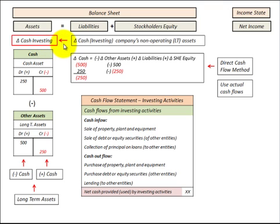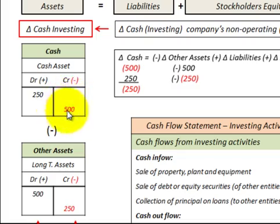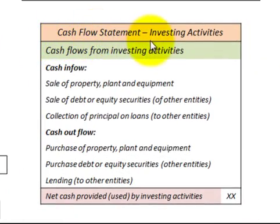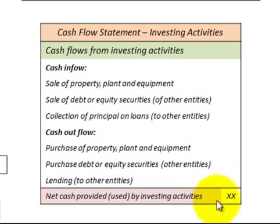In summary, our change in cash due to investing activities involves the company's non-operating long-term assets. A debit to our cash account is a cash inflow, and a credit to cash is a cash outflow. On our cash flow statement for investing activities, we list cash inflows, then cash outflows, and net the two amounts to arrive at net cash provided or used for investing activities. If cash was provided, that's a positive or increase in cash; if cash was used, that's a negative or decrease — either positive or negative is what we're looking for.